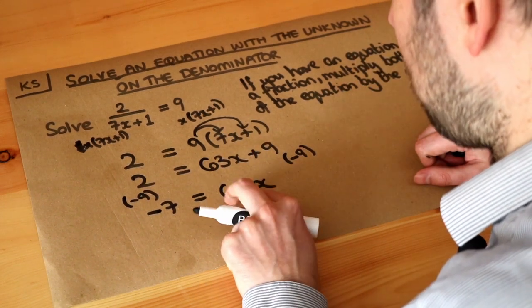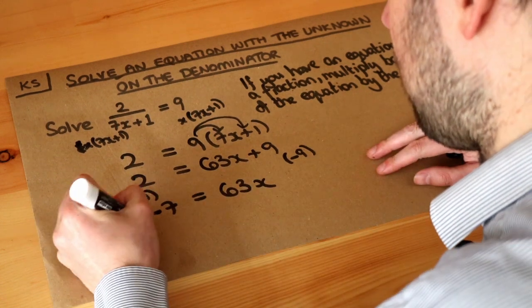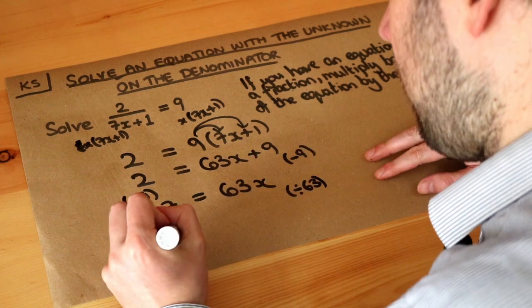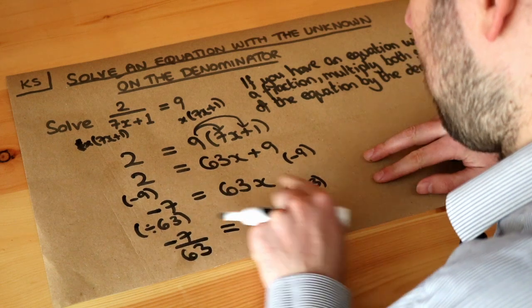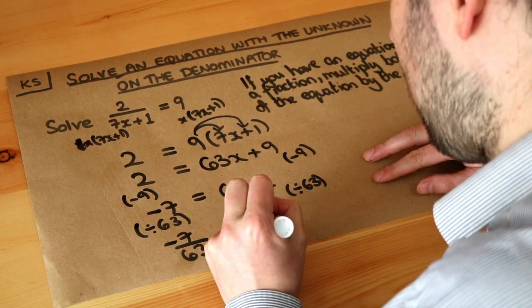And finally, x has been multiplied by 63. We want to get rid of that times by 63, so we divide both sides of the equation by 63. So we get minus 7 over 63. And the divide by 63 cancels out that times by 63, and we're just left with x.